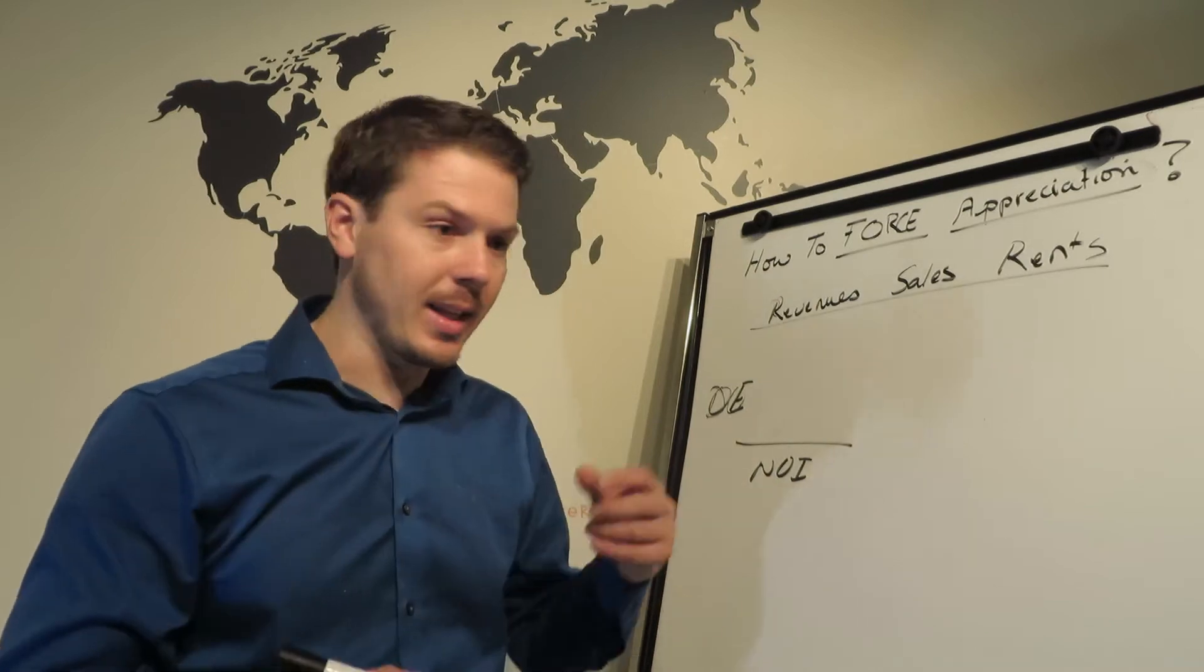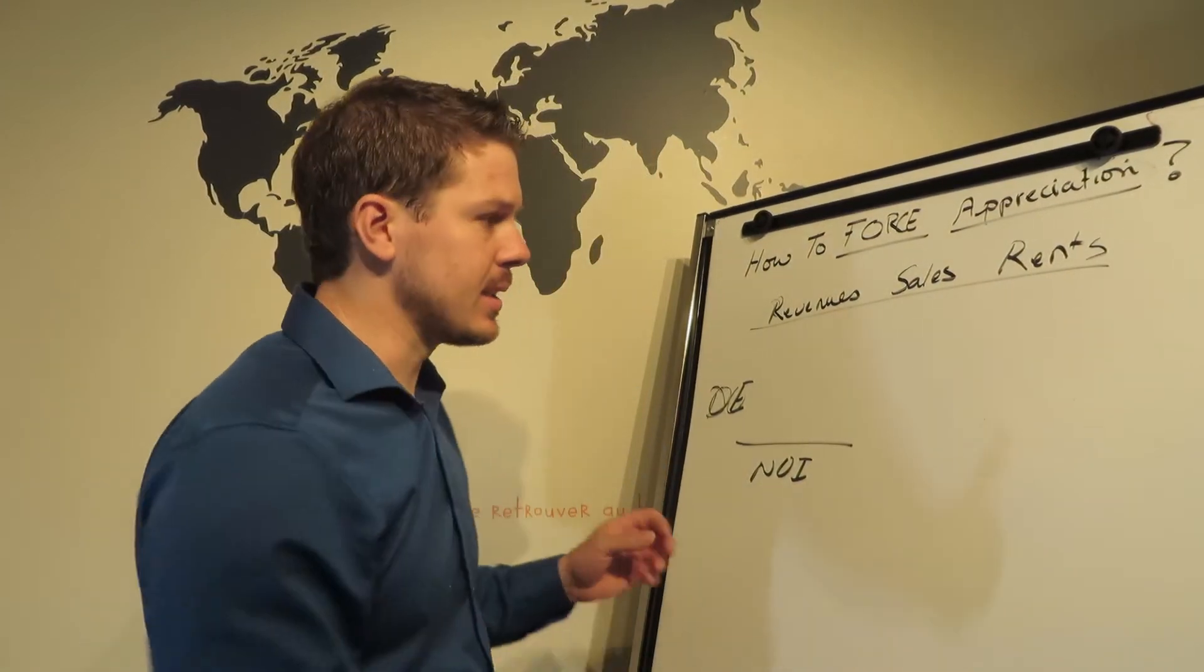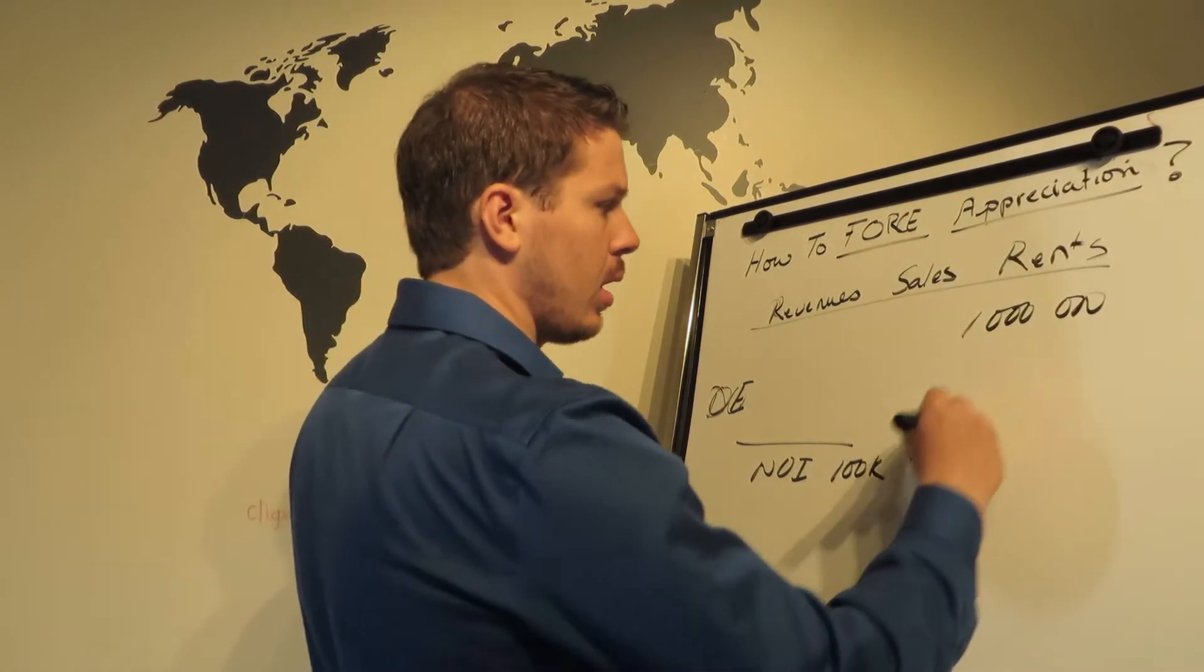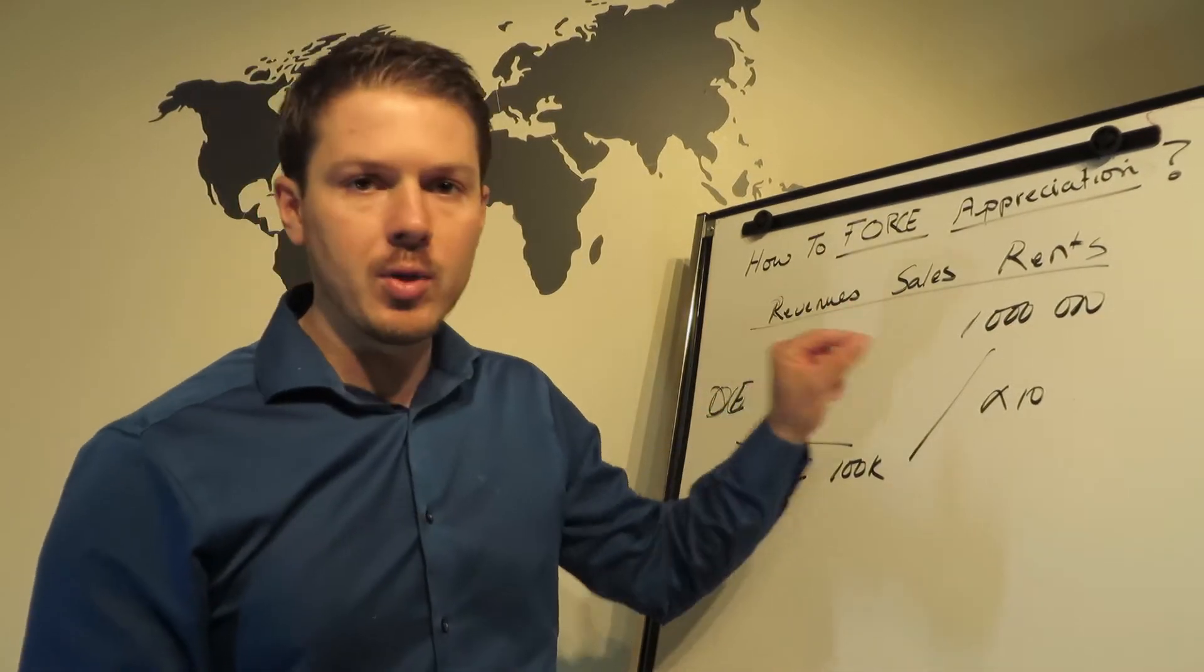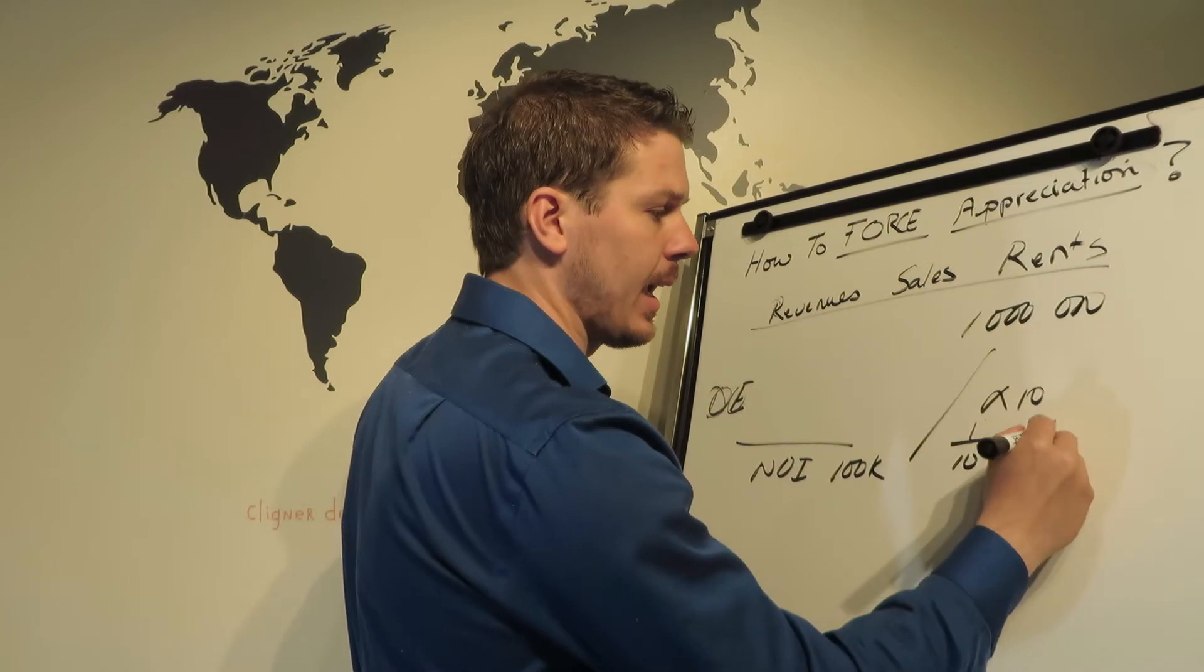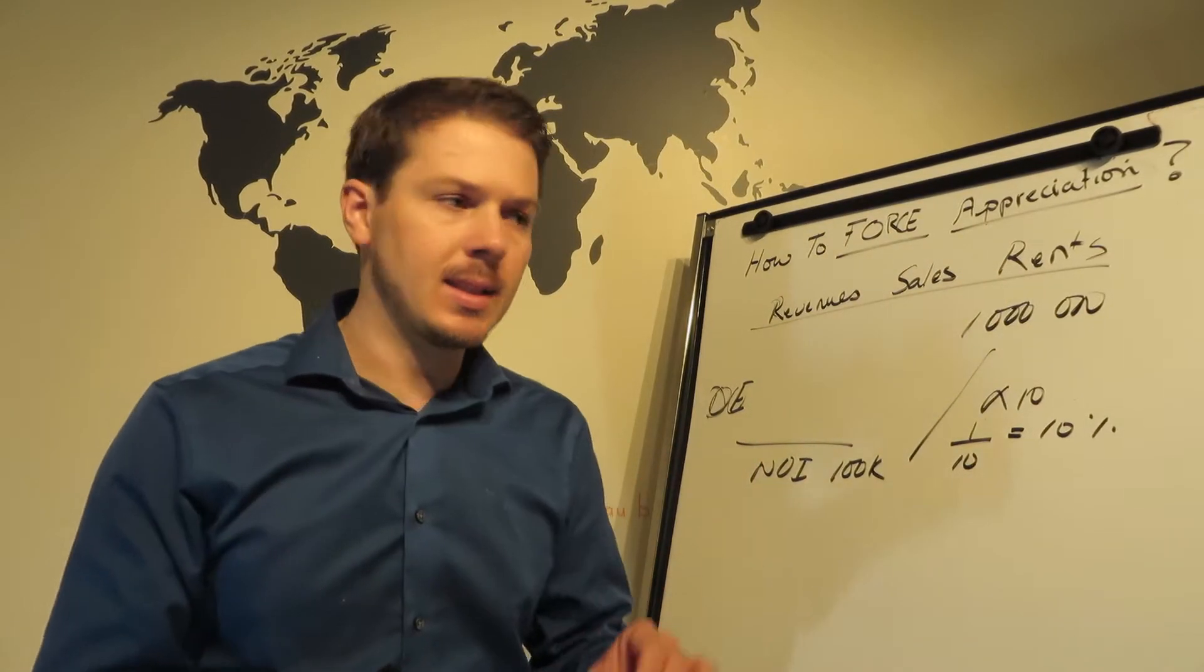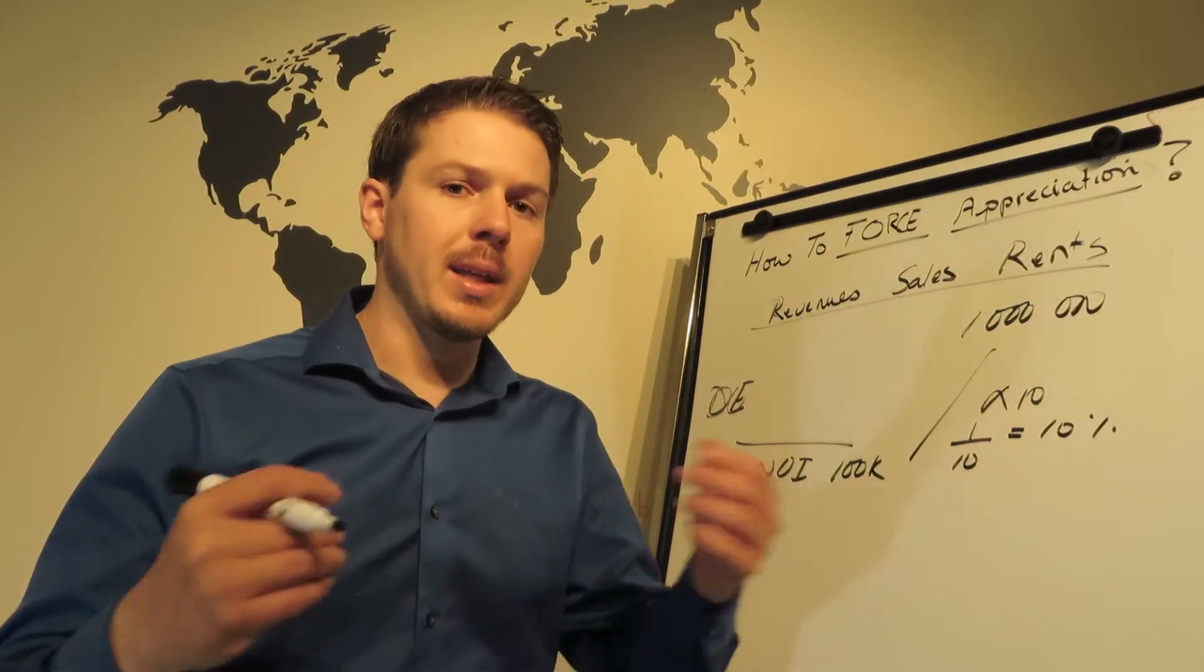Then we get to this magic number, the NOI, the net operating income. When we understand this number, the net operating income, then we start to understand how many assets are inside that business. Say the business has a million dollars of assets and the business makes a hundred K per year. So this is a multiple of ten times. This means if you want to buy this business and get this net operating income, you're going to have to pay a million dollars to get 100K. It's also the same as if you take one divided by ten, a ten percent yield.